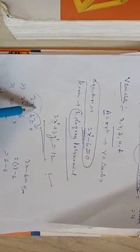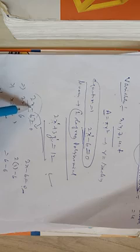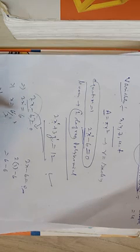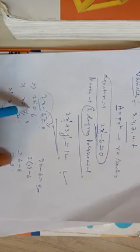One thing to keep in mind: this linear equation in one variable has only one solution. Why? Because the variable is only x, and 2 and 6 are constants. So you get only x equals 3 as the solution. No matter what process you use, you will get only one solution for a linear equation in one variable.